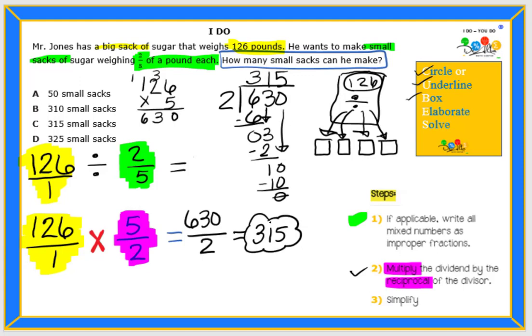Let's look at our choices. Do we see 315 small sacks? That is correct. C would be our best answer.